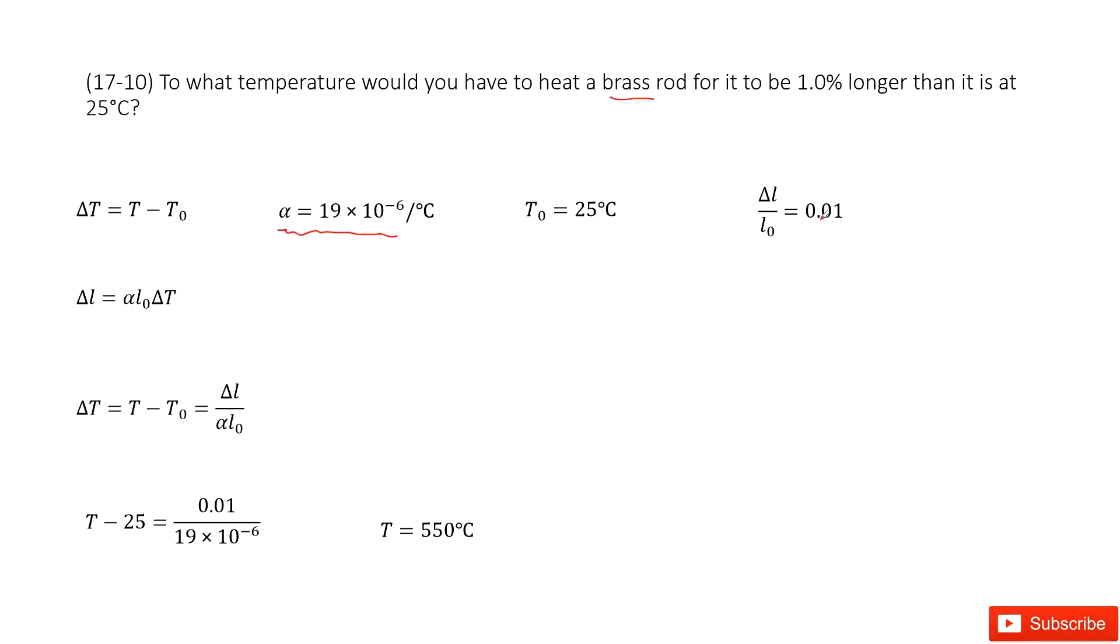So now we can see what we want to find. We want to find the temperature, the final temperature compared to the initial temperature, to make this brass rod increase 1%. So this is delta T, and delta T equals the temperature we don't know. We want to find T minus T0.